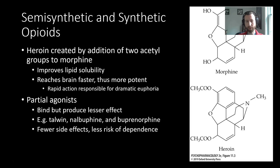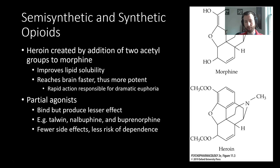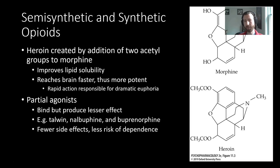There also exist partial agonists — we've discussed this type of drug previously. These bind but produce a lesser effect than a full agonist would. Examples include Talwood, Nalbuphine, and Buprenorphine. These partial agonists have fewer side effects and a lesser risk of dependence, and we'll come back to some of these later on.